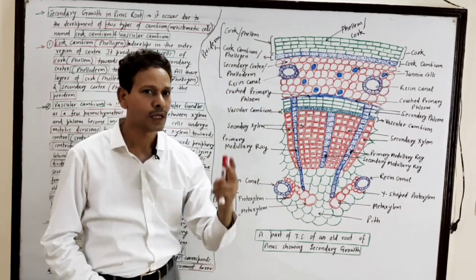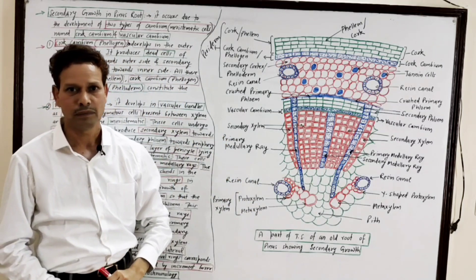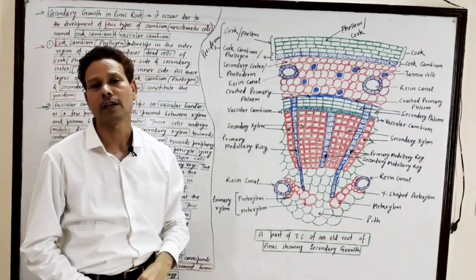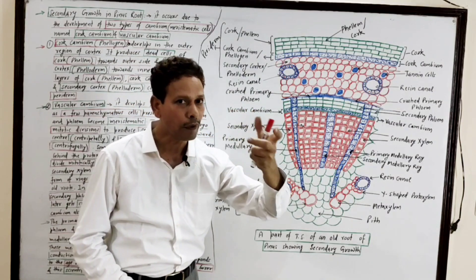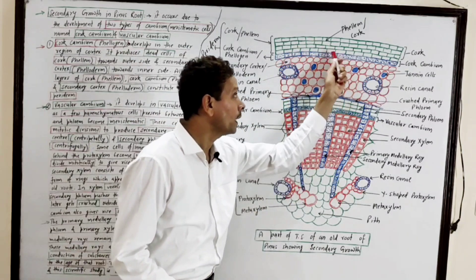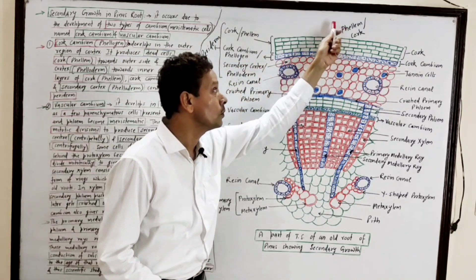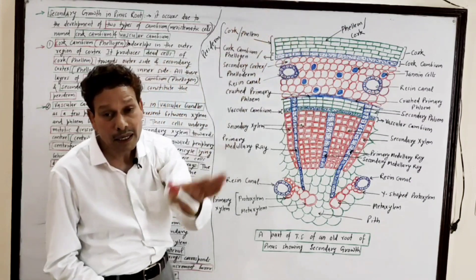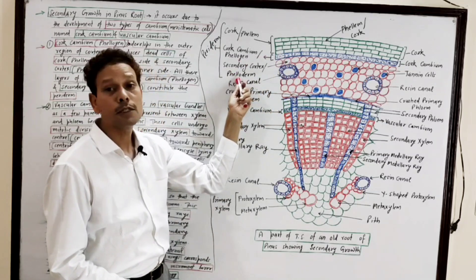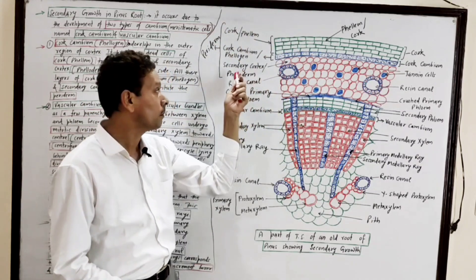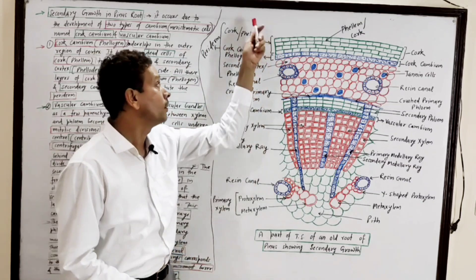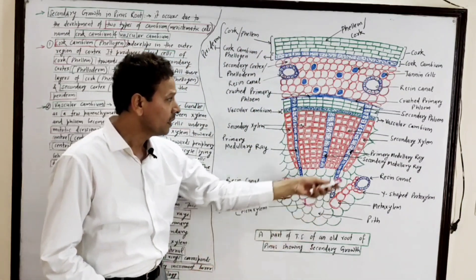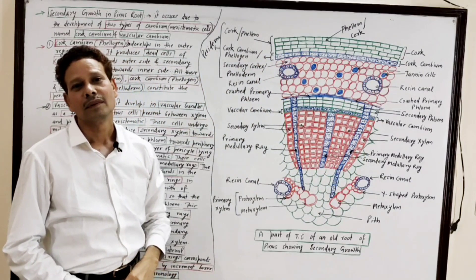This is all about secondary growth in Pinus root. To summarize: secondary growth occurs due to two types of cambium. One type in the cortex is cork cambium — phellogen — which produces dead cells (cork/phellem) in the outer region and secondary cortex (phelloderm) on the inner side. Together, phelloderm, phellogen, and phellem collectively constitute the periderm.